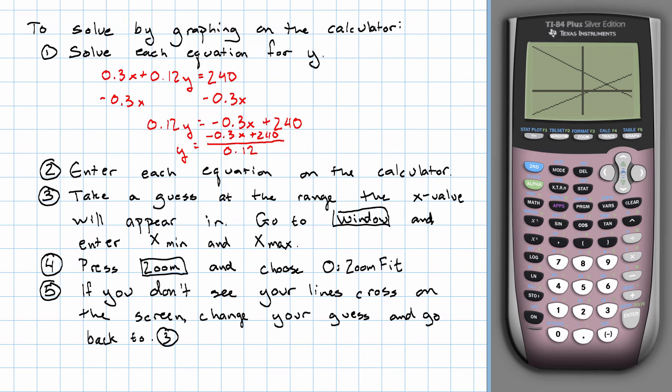If you don't see your lines cross on the screen, that means you have to try a different guess. Change your guess, go back to three, and start from there. If you do see the lines cross on the screen, you're going to use the feature on your calculator called intersect.